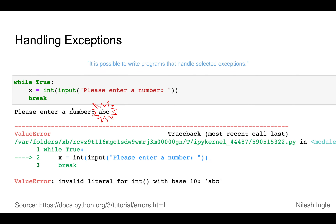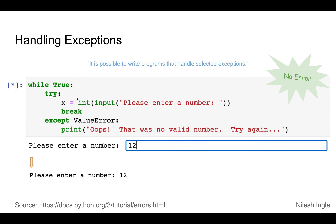But if you enter a character such as 'abc,' it will throw a ValueError. Again, this is the traceback, here we have the name of the error, and here we have the description — 'invalid literal for int with base 10: abc' — so it's not expecting 'abc,' it's expecting an integer value. What we can do is put this line of code into a try block, which gives us an opportunity to do something about that error.